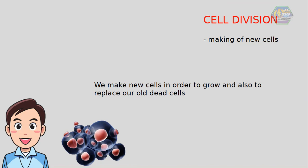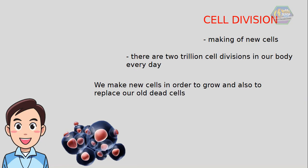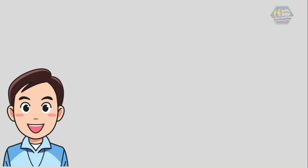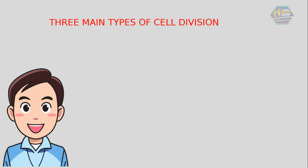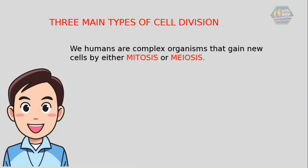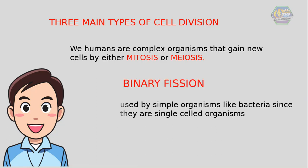In fact, there are 2 trillion cell divisions in our body every day. Now, what are the types of cell division? There are three main types. We humans are complex organisms that gain new cells by either mitosis or meiosis. Binary fission is used by simple organisms like bacteria, since they are single-cell organisms. So let's find out how these cell divisions happen.